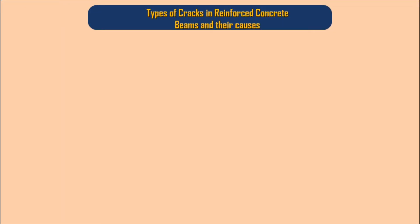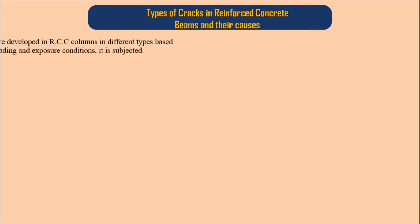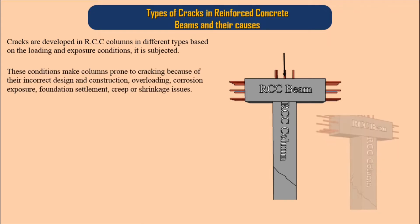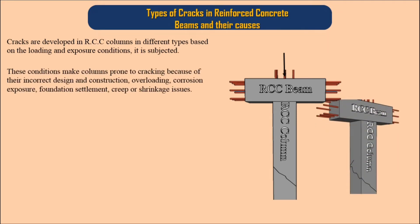Cracks are developed in RCC columns in different types based on the loading and exposure conditions they are subjected to. These conditions make columns prone to cracking because of incorrect design and construction, overloading, corrosion exposure, and foundation settlement.